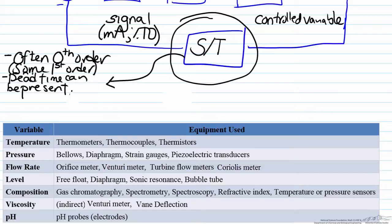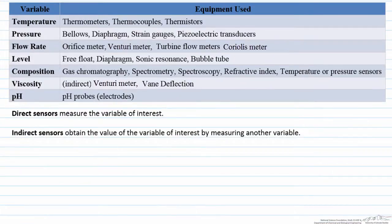The point we want to talk about here is when we talked about the definition of the sensor, we talked about the measurement of either the process variable of interest or a related variable. So this represents the difference between direct and indirect sensors. The two types of sensors that we have are direct sensors, which measure the variable of interest, and indirect sensors, which find the value of your variable of interest by measuring another variable.